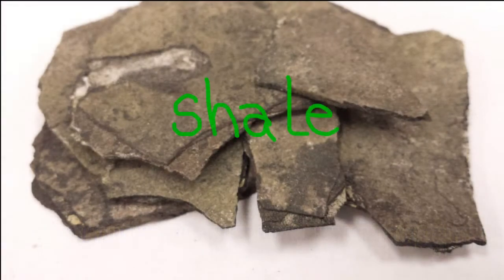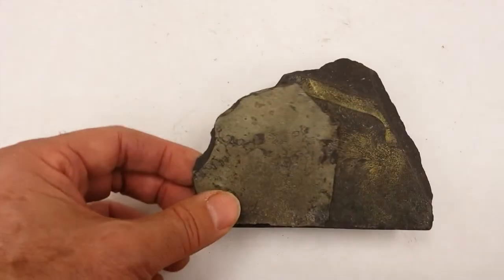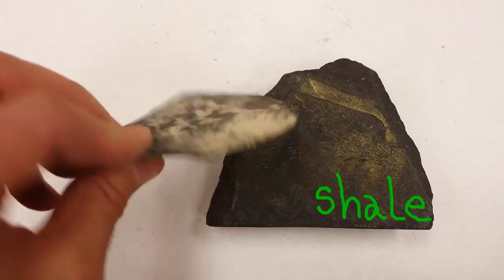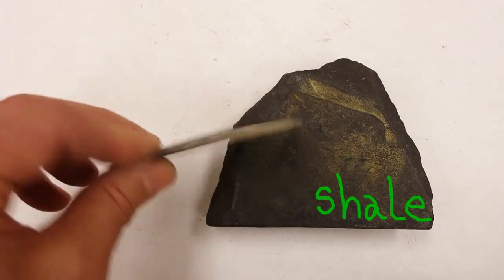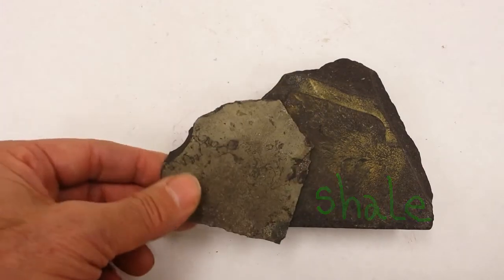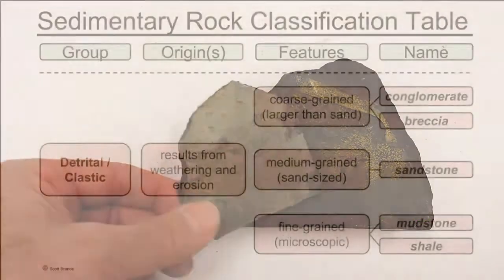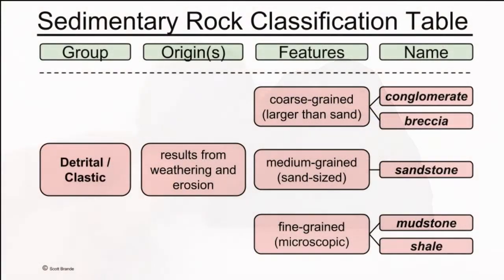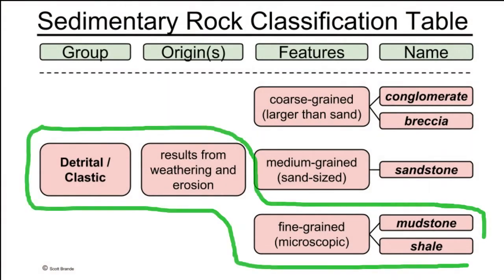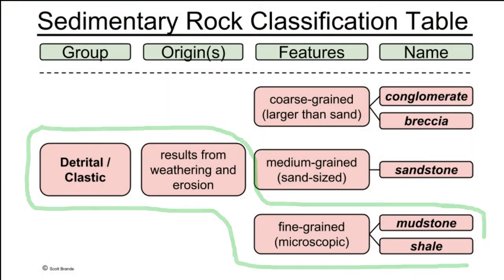There's a type of fine-grained clastic rock that tends to split into thin shingle-like sheets. So the distinction between mudstone and shale is whether or not the fine-grained rock tends to split.